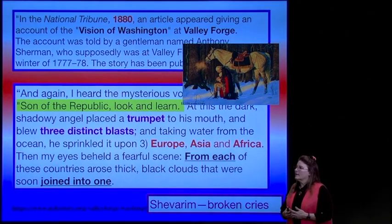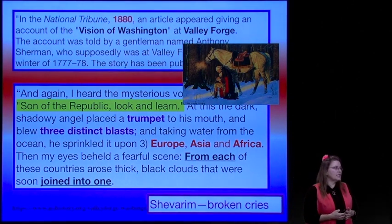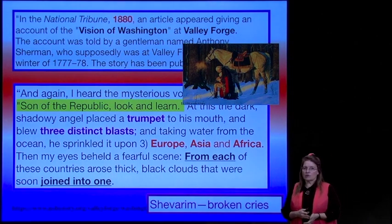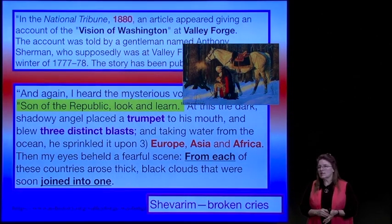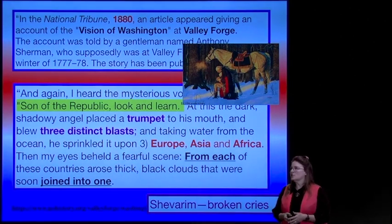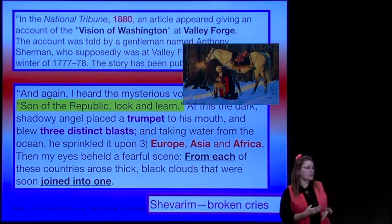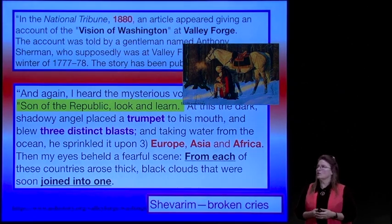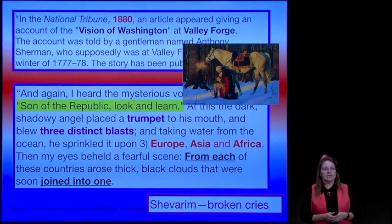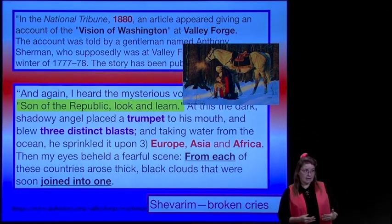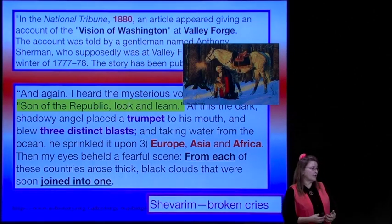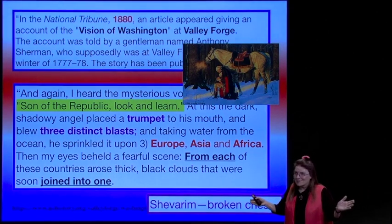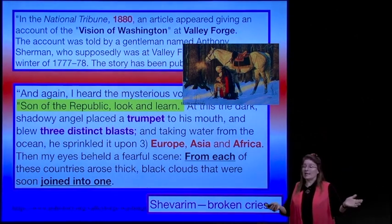In order to do that, let's first go back and take a look at the vision of George Washington that he reportedly had at Valley Forge. This is an account given by Anthony Sherman, supposedly at Valley Forge in the winter of 1777–1778. They've had a hard time substantiating the actual details of the location of the vision. Apparently, Anthony Sherman didn't report this vision until his deathbed, and so a couple of his details don't match up. But if you look at what he's remembering, it is so prophetic and accurate.